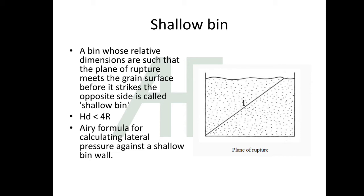The formula is: the diameter of shallow bin should be less than 4 times hydraulic radius of that bin. Hydraulic radius is nothing but area divided by perimeter.